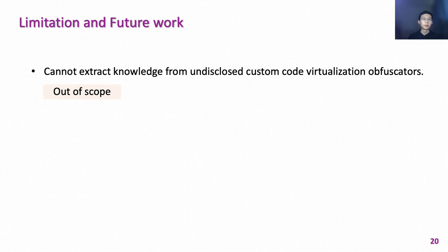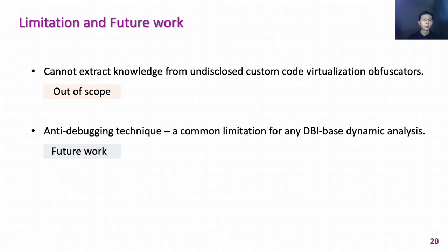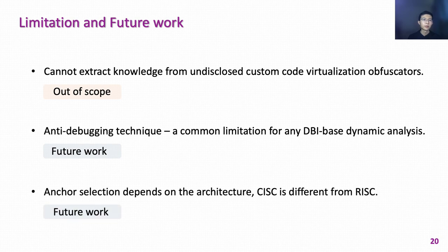Regarding limitations of our work: first, CIA attackers have to interact with obfuscators, so inaccessible obfuscators are out of scope. Second, the CIA model is built on top of DBI-based dynamic analysis, which can be impeded by anti-debugging techniques, but we can combine other countermeasures to defeat these anti-techniques. Lastly, the selection of anchor instructions depends on the architecture — for example, RISC is a reduced instruction set, which may limit the number of eligible instructions. We leave the last two as future work.